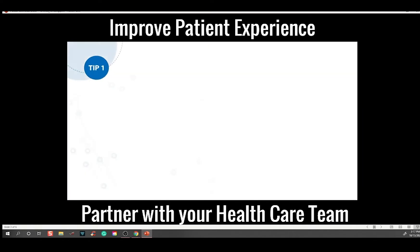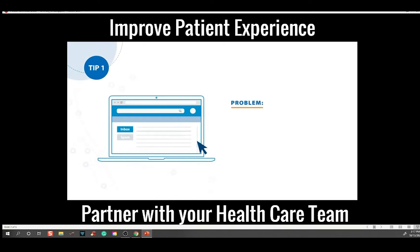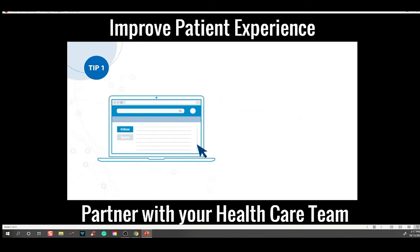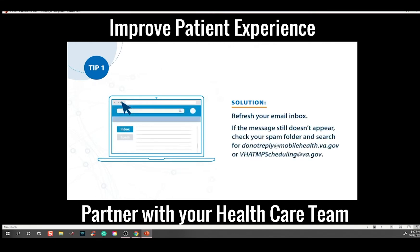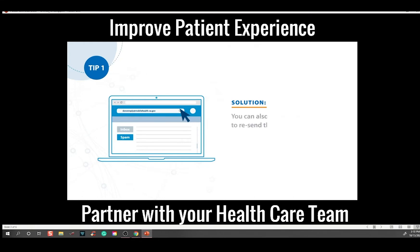Tip number one. Problem: I can't find my VA Video Connect appointment email. Solution: Refresh your email inbox. If the message still doesn't appear, check your spam folder and search for donotreply@mobilehealth.va.gov or vhatmpscheduling@va.gov. You can also ask your VA care team to resend the appointment email.